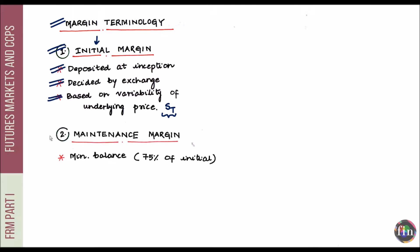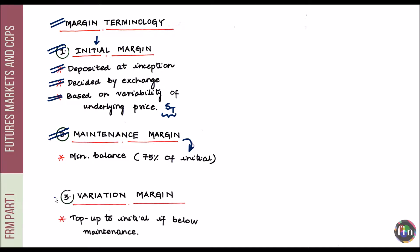The second margin type is maintenance margin — the minimum balance that must always be maintained in your margin account. Typically, maintenance margin is set to 75% of the initial margin. The third is variation margin — the top-up amount required if you get a margin call. This top-up amount brings the balance in your margin account back to the initial margin. The trigger event is when the balance falls below maintenance margin, and the variation margin is sized to bring it back up to the initial margin.